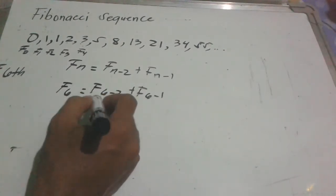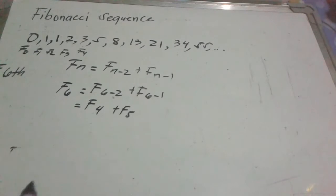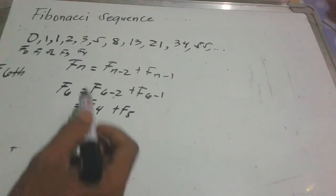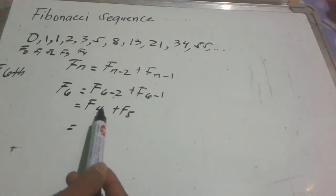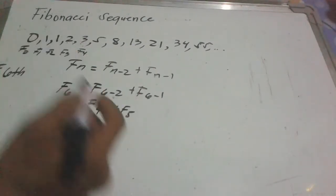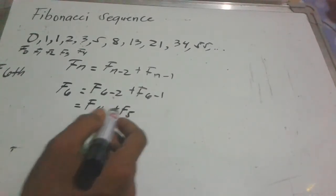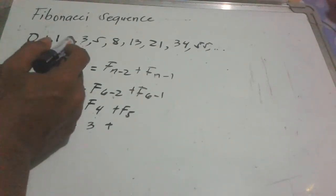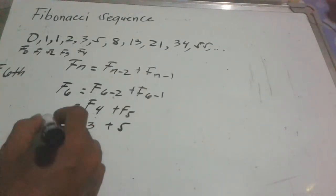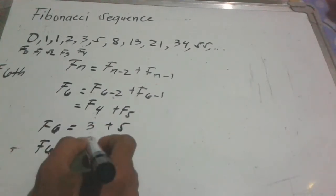F sub 6 is equal to F sub (6 minus 2) plus F sub (6 minus 1), which gives us F sub 4 plus F sub 5. The value of F sub 4 is — counting: 0, 1, 2, 3, 4 — that's 3. The value of F sub 5 is — counting: 0, 1, 2, 3, 4, 5 — that's 5. So F sub 6 is 3 plus 5, which equals 8.